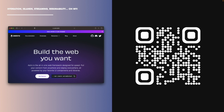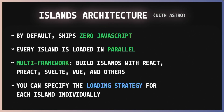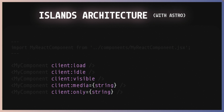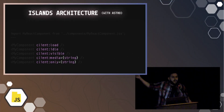A few years later, in 2021, we got Astro. Astro was built from scratch around the idea of islands, with the premise of by default shipping just zero JavaScript. And you had each Astro island hydrated and loaded in parallel. Another great thing about Astro is that basically you can build islands with Preact, Svelte, Vue, and many others. And another great DX thing is that you can specify the loading strategy for each island individually.